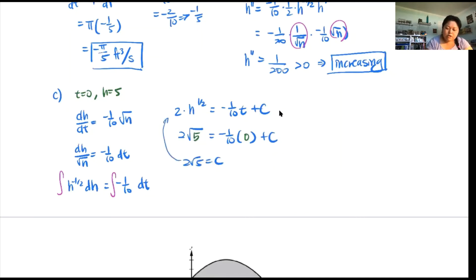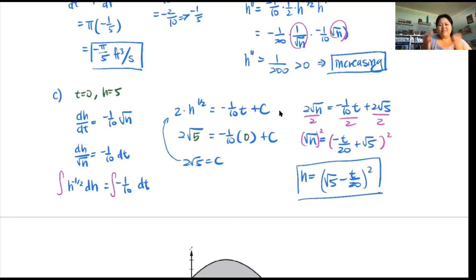Now we'll take that and plug it back into this equation. 2 root h equals negative 1 over 10 t plus 2 root 5. First thing I would do is get rid of the 2 because I'm trying to solve for h. Divide everybody by 2. That gives me root h equals negative t over 20 plus root 5. Last thing you want to get rid of is the root, so square both sides. Your h is defined as root 5 minus t over 20 squared. You don't have to multiply the whole thing out. You can actually leave it as this. That's it for this problem.